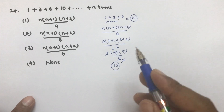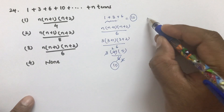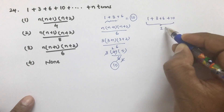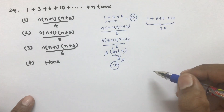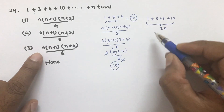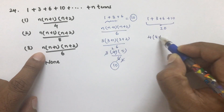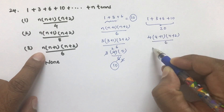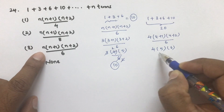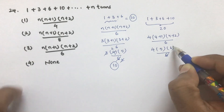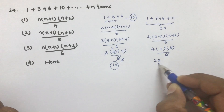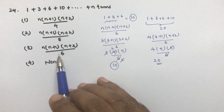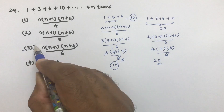Verify with four terms: 1+3+6+10 = 20. Substitute n=4 in the same option: 4×(4+1)×(4+2)/6 = 4×5×6/6 = 4×5 = 20. It matches again. By trial and error checking all options, the correct option is 3: n(n+1)(n+2)/6.